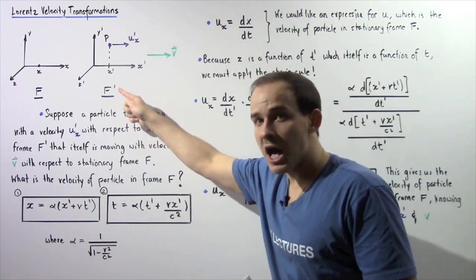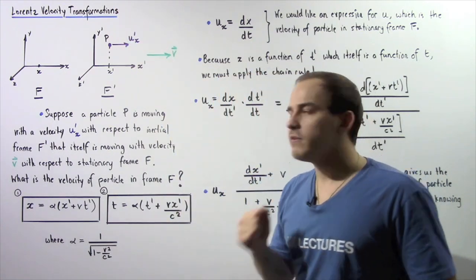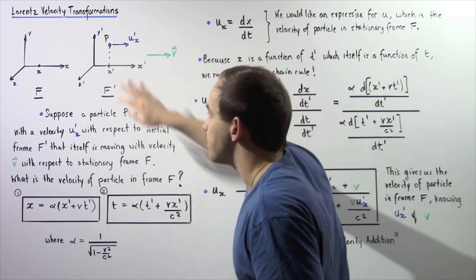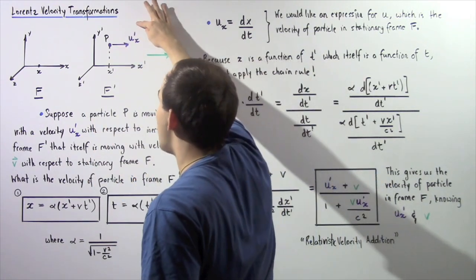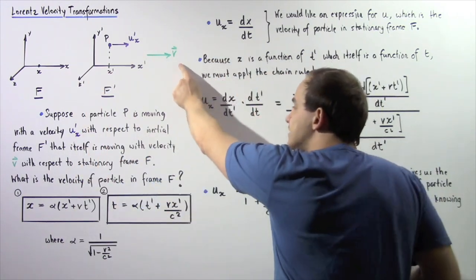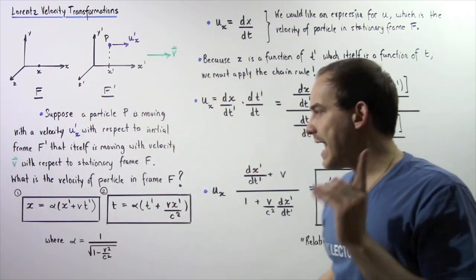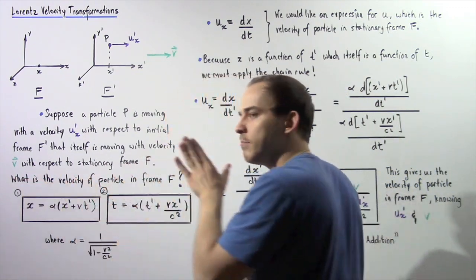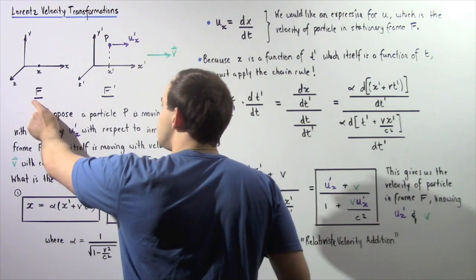Within frame F', we have a particle given by point P that is moving with velocity u' along the x-axis with respect to frame F'. This frame contains a particle moving with known velocity u' along the x-axis, and this entire frame itself is moving with velocity v with respect to our stationary frame F. We want to answer the following important question: what is the velocity of the particle with respect to inertial reference frame F, which is assumed to be stationary?